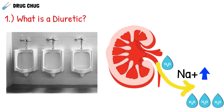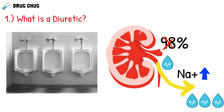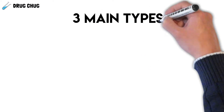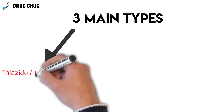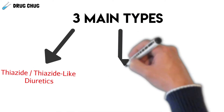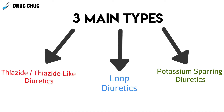Our kidneys typically reabsorb about 98% of the sodium in our blood. Diuretics block that reabsorption of sodium, forcing it to stay in the urine, which forces water to follow — and then we pee. There are only three types of diuretics: thiazide and thiazide-like diuretics, loop diuretics, and potassium-sparing diuretics, and we'll focus on each one throughout this video.